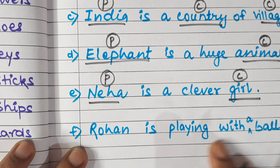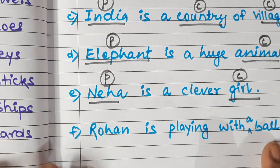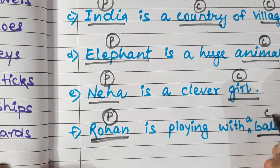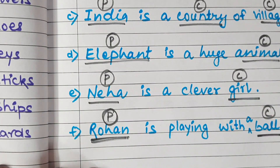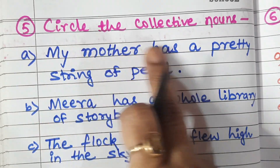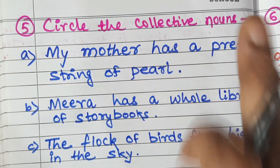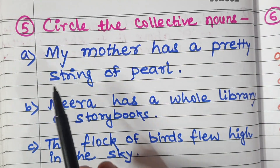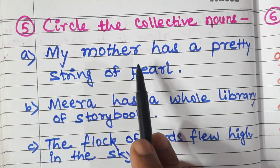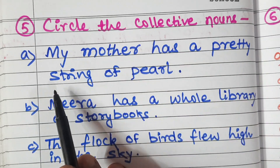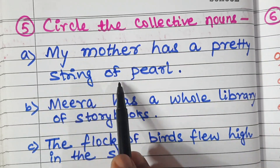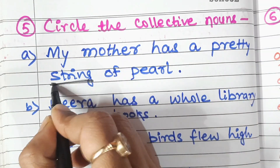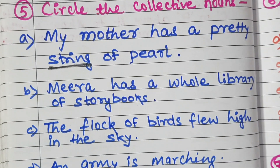Rohan is playing with a ball. Rohan is a proper noun and ball is a common noun. Now, circle the collective nouns. Take a sentence and circle the collective noun. Like: my mother has a pretty string of pearls — here 'string' is the collective noun.